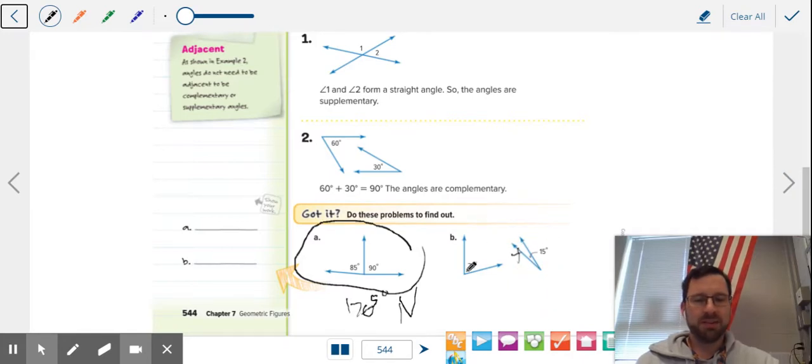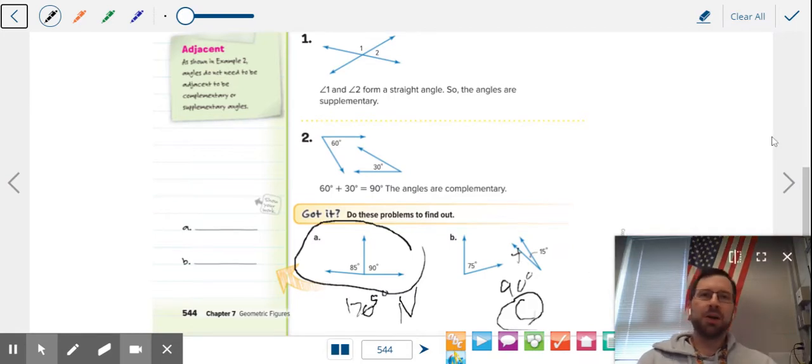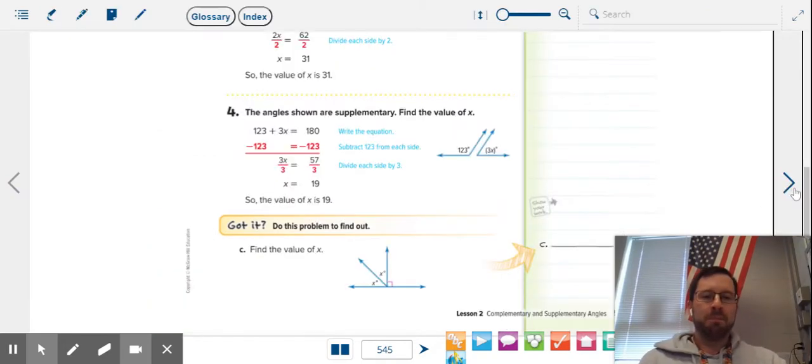If you add these two up, 75 plus 15 is 90 degrees, and that would be complementary. If we had any angles that added up to 180, it would be supplementary. Easy way to remember: C comes before S in the alphabet, 90 comes before 180 in numbers.